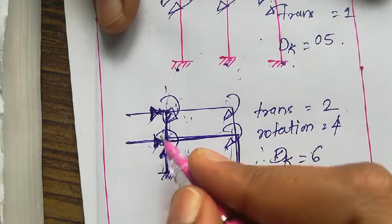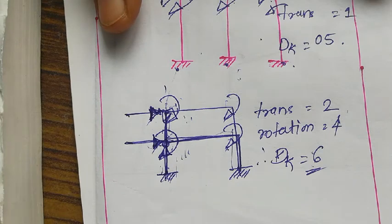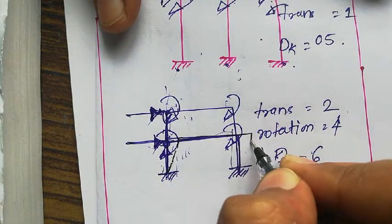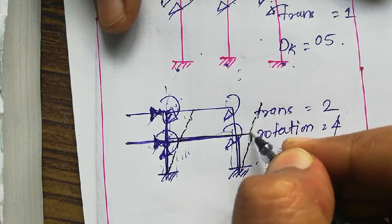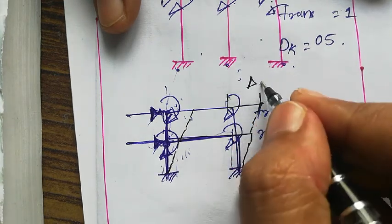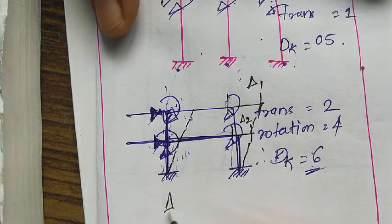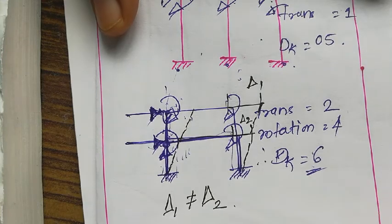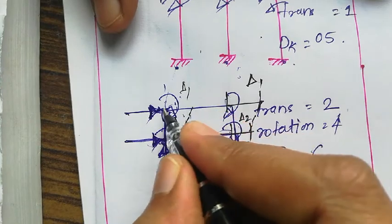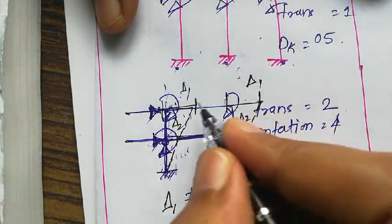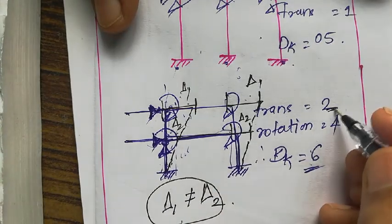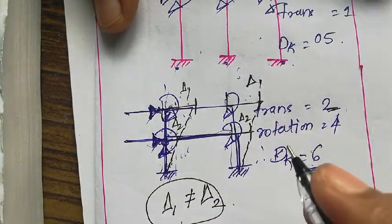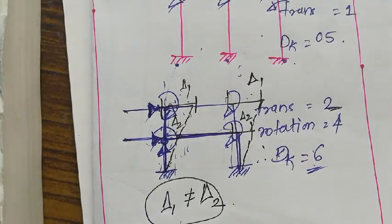The degree of kinematic indeterminacy for this two-storied portal frame is six — two translations and four rotations. Remember: as the number of stories increases, each story has a different translation. In one story, the two column deflections delta 1 are the same, but across different stories delta 1 is not equal to delta 2. That is why we have two separate translations and four rotations. In the next class we will be doing influence line diagrams.